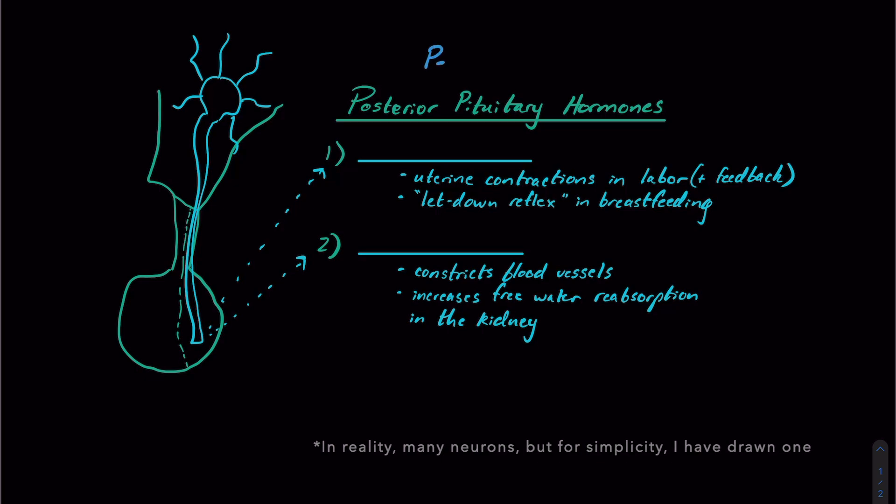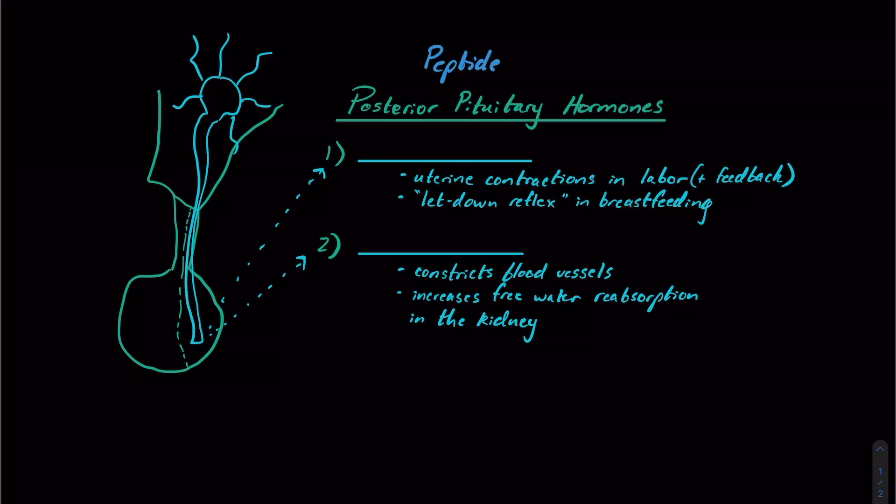And that neuron is going to synthesize the two different peptide hormones that the posterior pituitary is going to secrete. It will synthesize those and then those hormones will travel along down this axon and eventually be released in the posterior pituitary. So there's no vascular bed or portal system that's connecting the hypothalamus to the posterior pituitary like there is between the anterior pituitary and the hypothalamus.